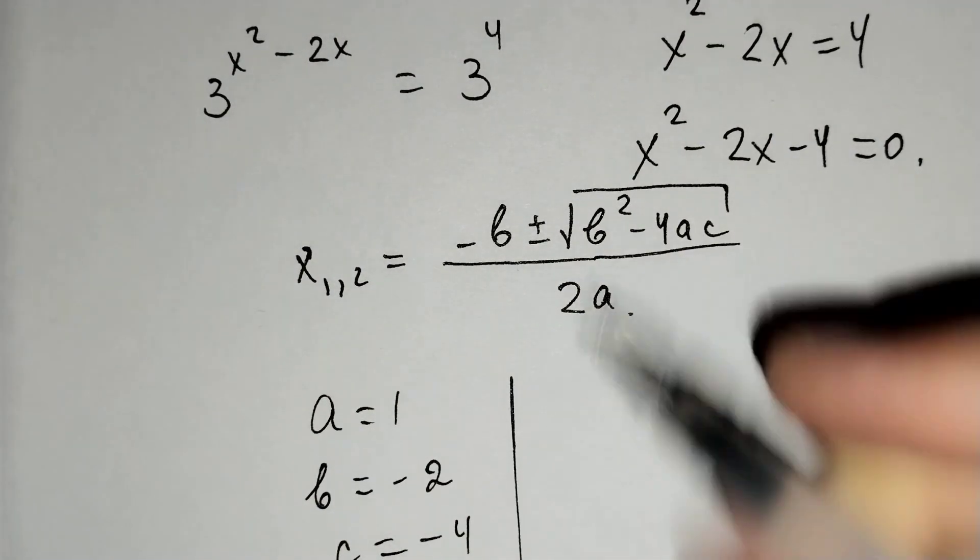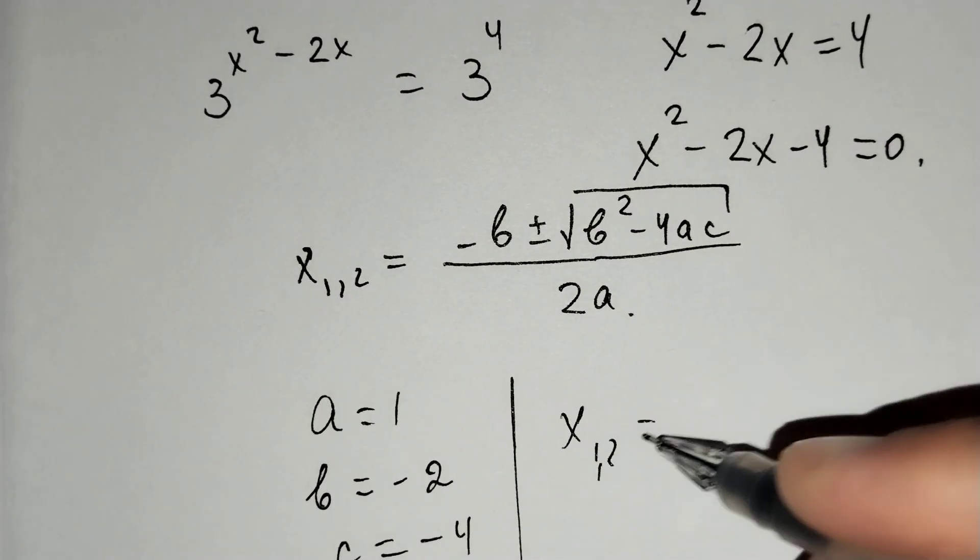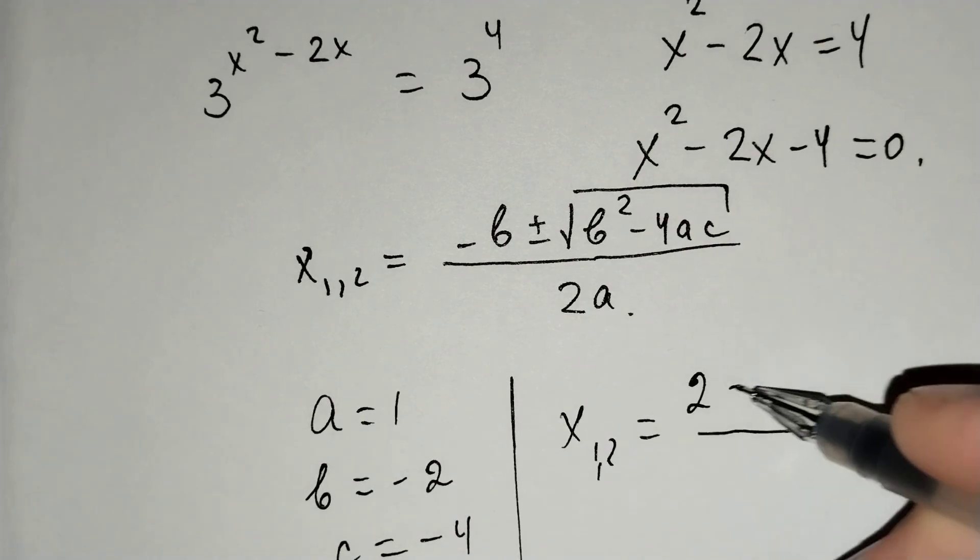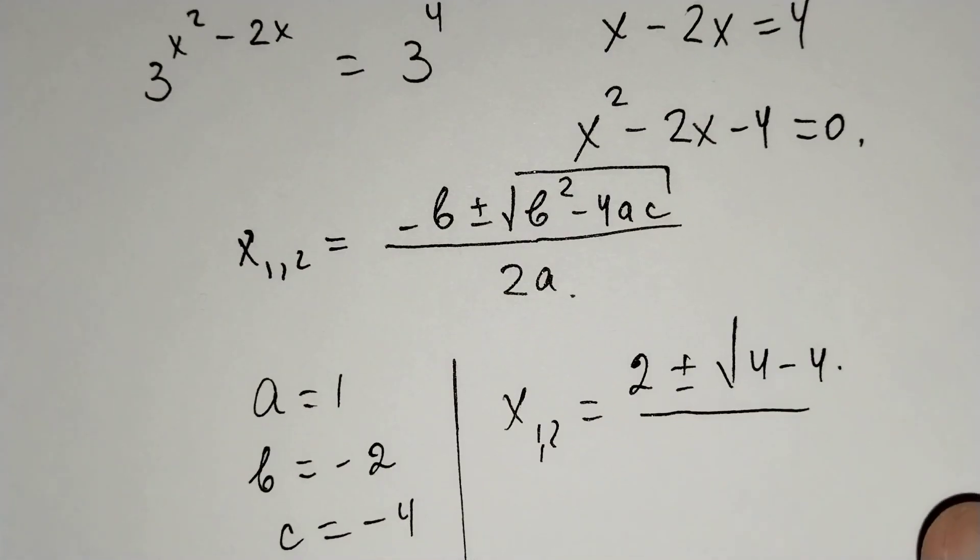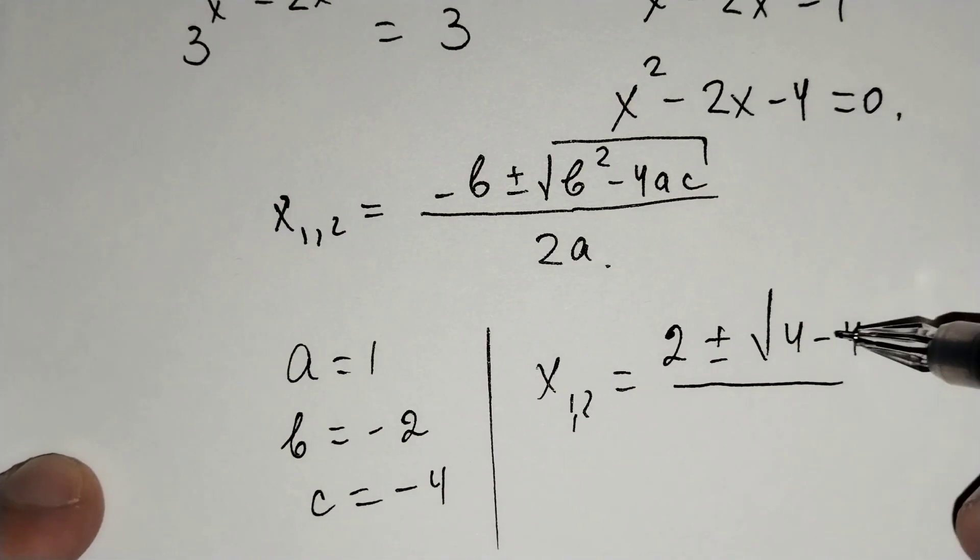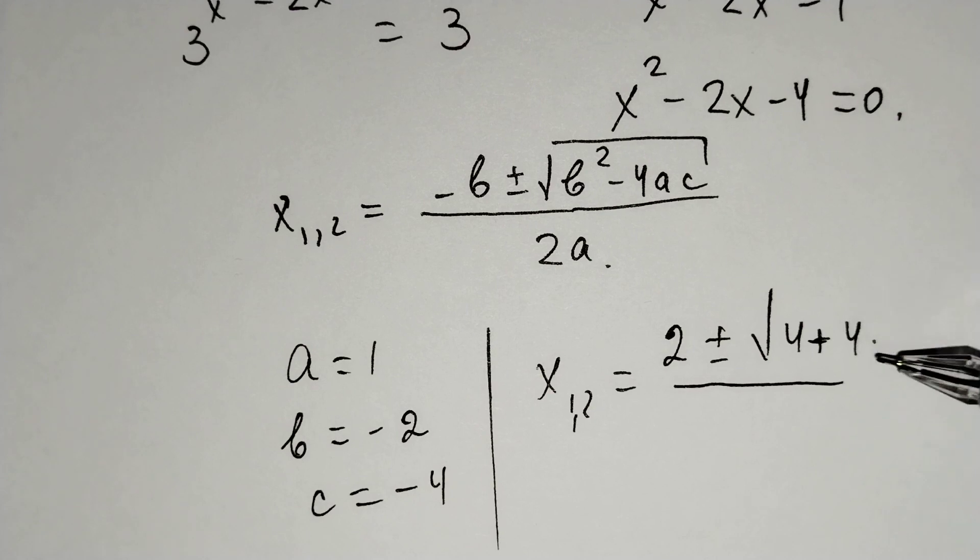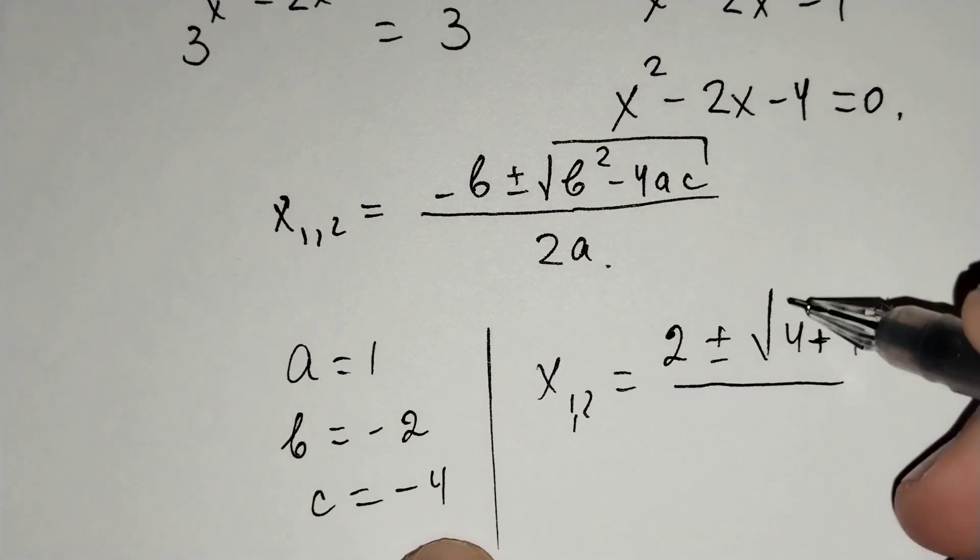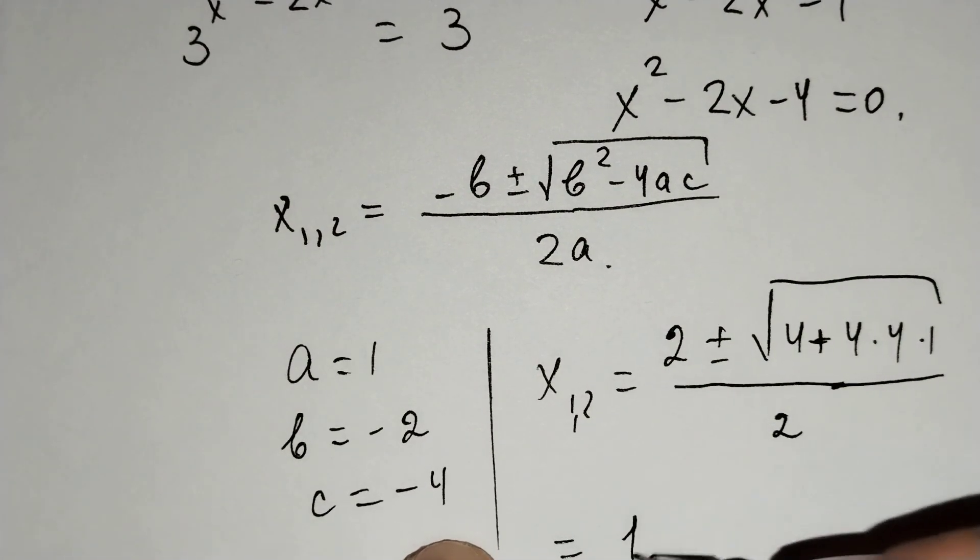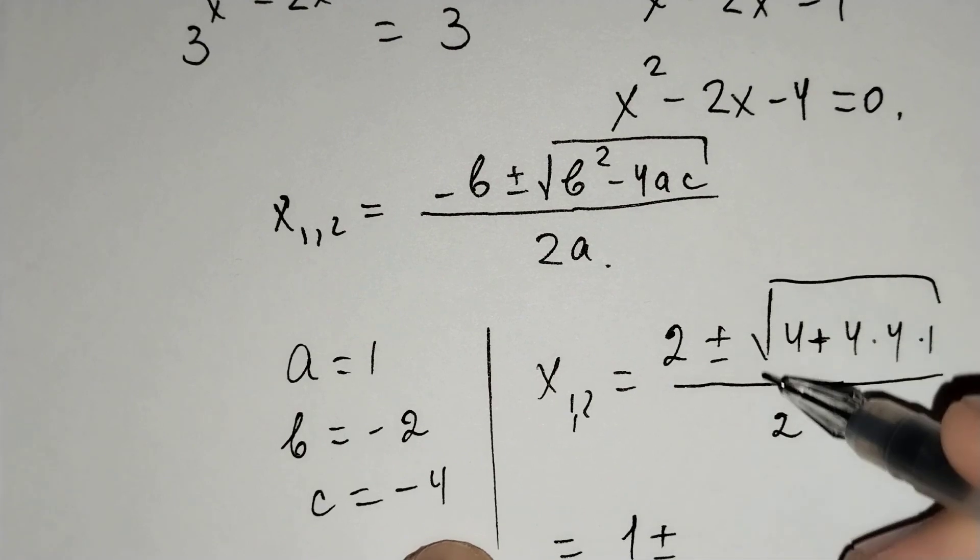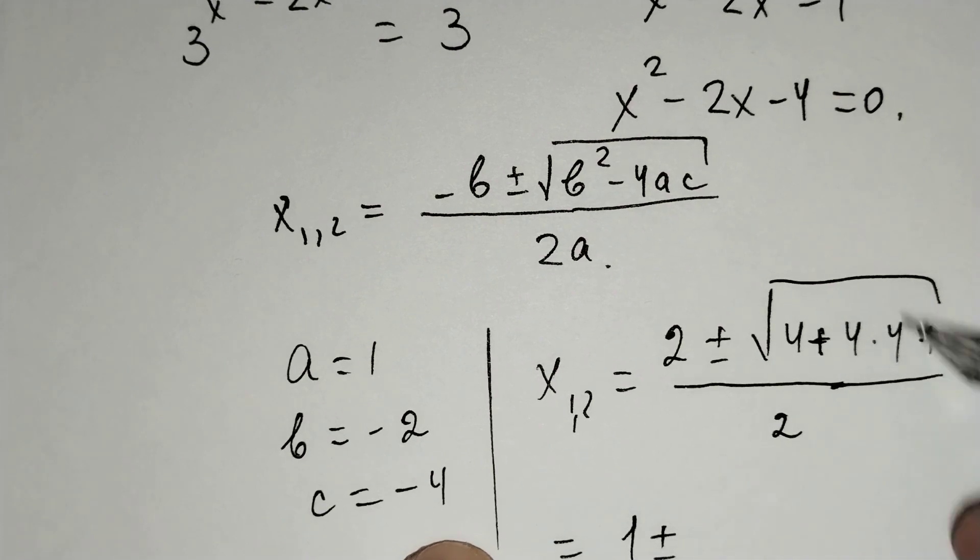Let's put this here. x1 and 2 equals 2 plus minus the square root of 4 plus 4 times 4 times 1 over 2. And this is equal to 1 plus minus square root of 4 plus 16.